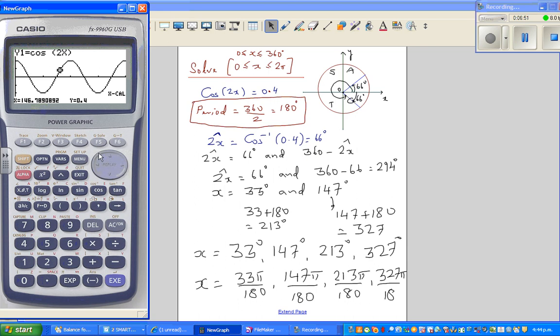If you scroll this, 146.7, that's 147. Then the next is 213 degrees and the next is 326, 327. Now if you want to write this in radians, the only thing that you do is you change the setting.